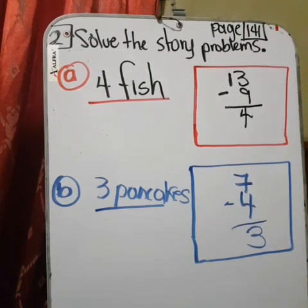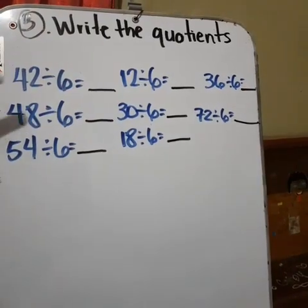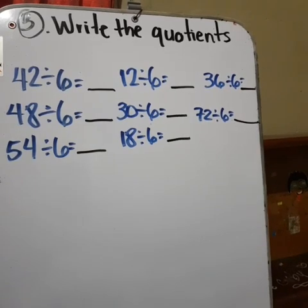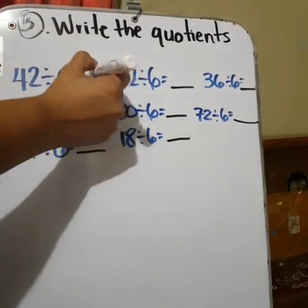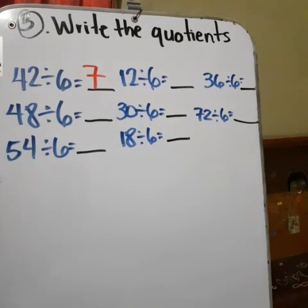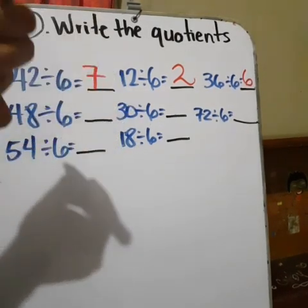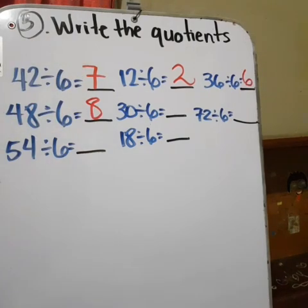Exercise three. Do it by yourself. Write that quotient. Exercise C, write that quotient. You have to make that division. Give me a number. Give me a number in the table of six that gives you forty-two. Un número en la tabla de seis que le dé cuarenta y dos. Seven. Twelve divided by six. Two. Thirty-six divided by six. Six. Forty-eight divided by six. Eight.